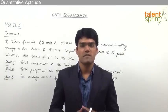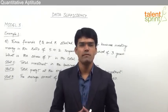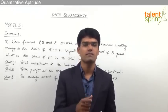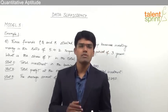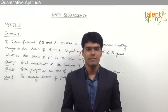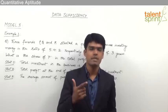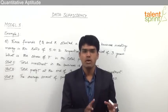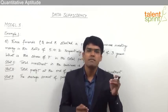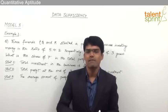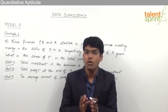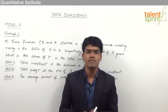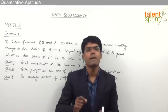Let us now take the third model from data sufficiency. In this model we have a question followed by three statements, but this is quite opposite to what we have done in model 2. In model 2 we had to find out which of the statements are required to get the answer, whereas in model 3 we have to find out which of the statements are not required in finding out the answer — i.e., which statements are useless.